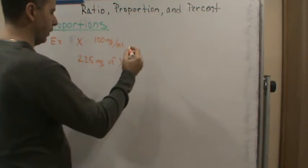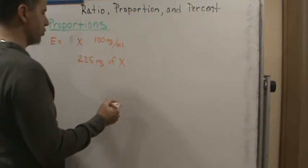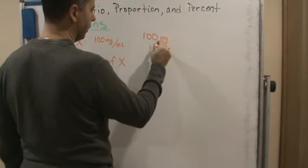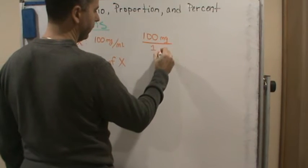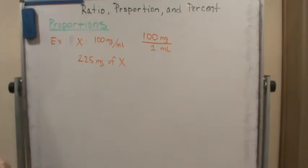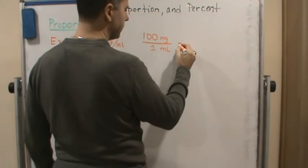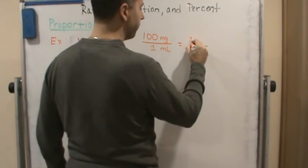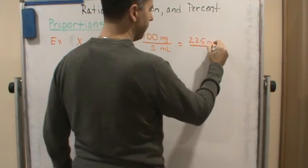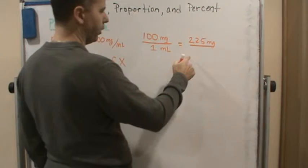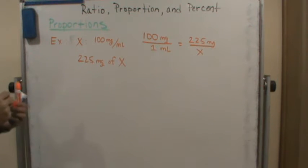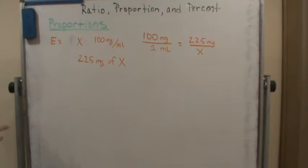Well, we set up a proportion. So we know that this can be set up as 100 milligrams per one milliliter. And we know that the doctor wants not 100 milligrams of the medication, but 225 milligrams of the medication. And so we want to know how much of the solution does he need?